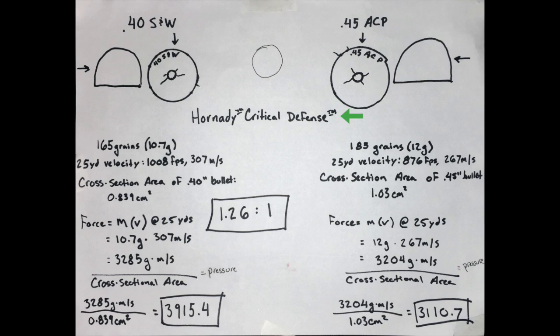For the Hornady Critical Defense round in 40 Smith & Wesson, it's a 165 grain round with a velocity of 1008 feet per second or 307 meters per second at 25 yards. The 45 ACP round is 183 grains with a 25 yard velocity of 876 feet per second or 267 meters per second.